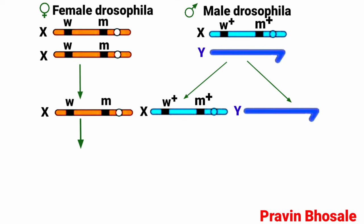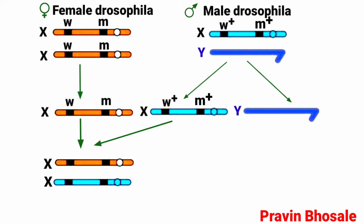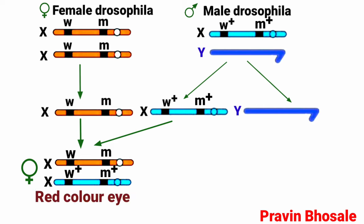If the egg having X chromosome with genes small w and small m is fertilized by sperm having X chromosome with genes w plus and m plus, the combination will be X and X. On one X chromosome are genes small w and small m; on the other X chromosome are genes w plus and m plus. This is a female, and since the dominant genes are present, she will have red color eye and normal wing — it's a wild type.